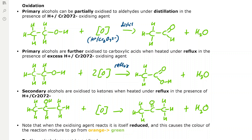Secondary alcohols oxidize to ketones when heated under reflux in the presence of acidified potassium dichromate. You can see here we have a secondary alcohol because the carbon which the alcohol group is attached to has two alkyl groups attached to it, and then we form a ketone and water.